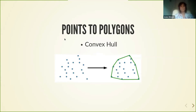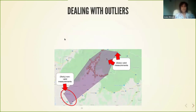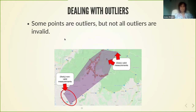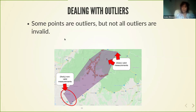We had a small challenge here because we didn't want to use all the points in the dataset. There were some outliers, but we had another challenge: not all the outliers were invalid. We wanted to consider some of the outliers, because measurements can show up sometimes in odd locations due to the behavior of signals around things like water or mountains.